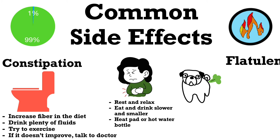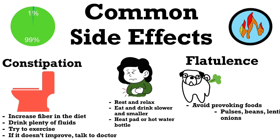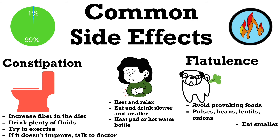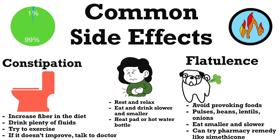The last common side effect is flatulence. Try to avoid foods that provoke it, like pulses, lentils, beans, and onions. You can try pharmacy alternatives such as simeticone, and try eating smaller and slower meals. If these things continue to bother you, speak to someone and get some advice.